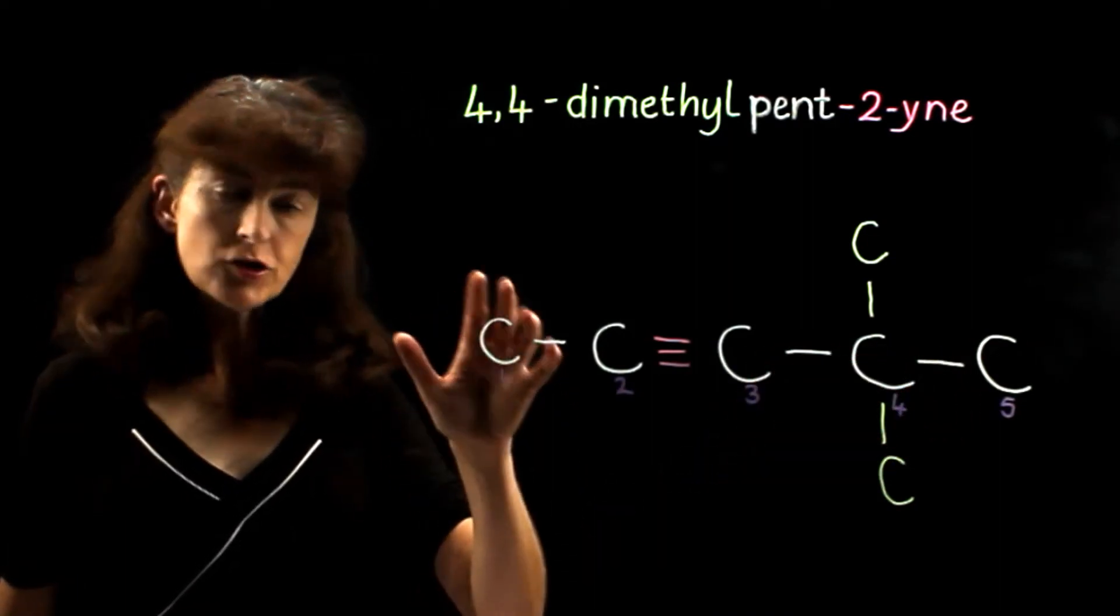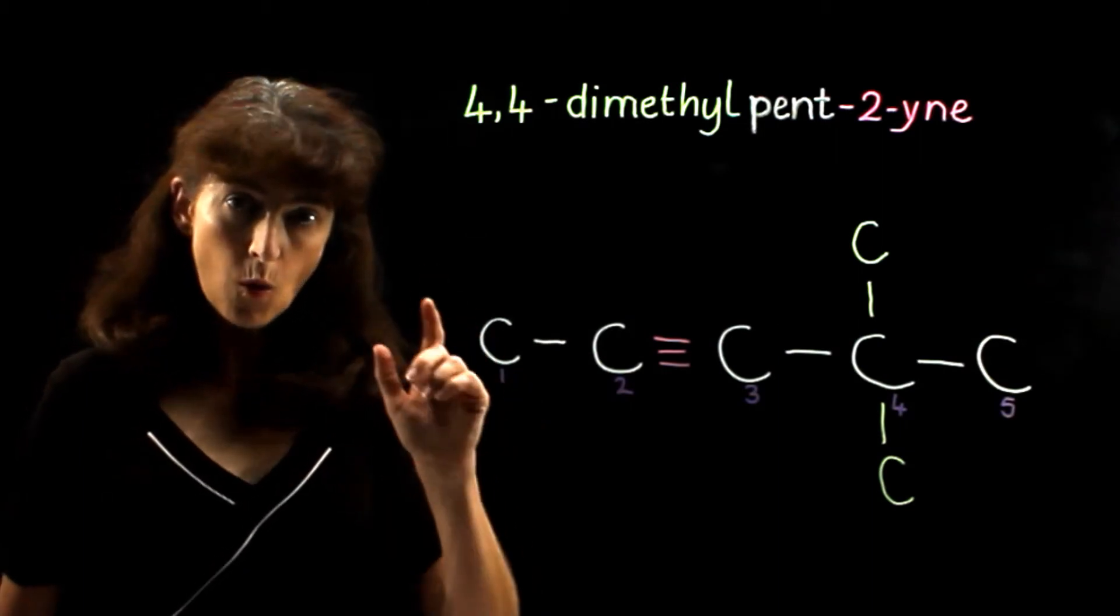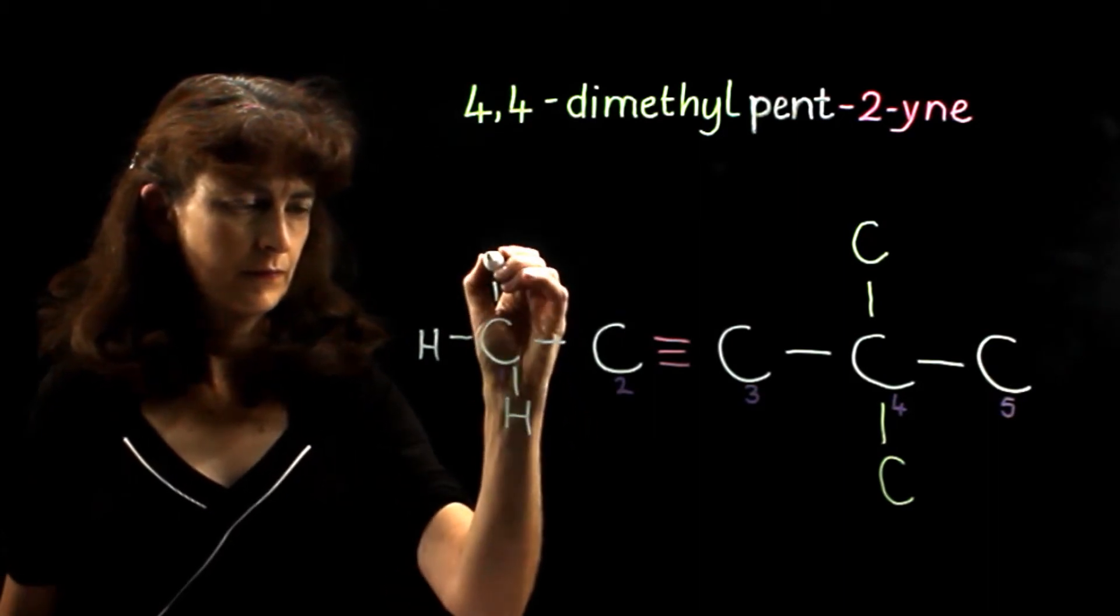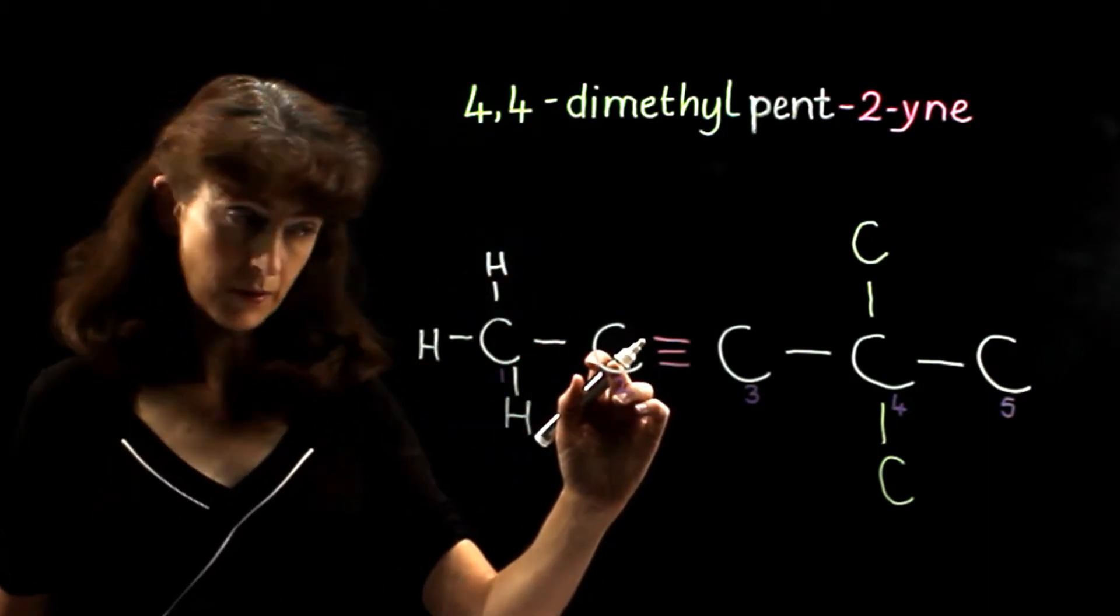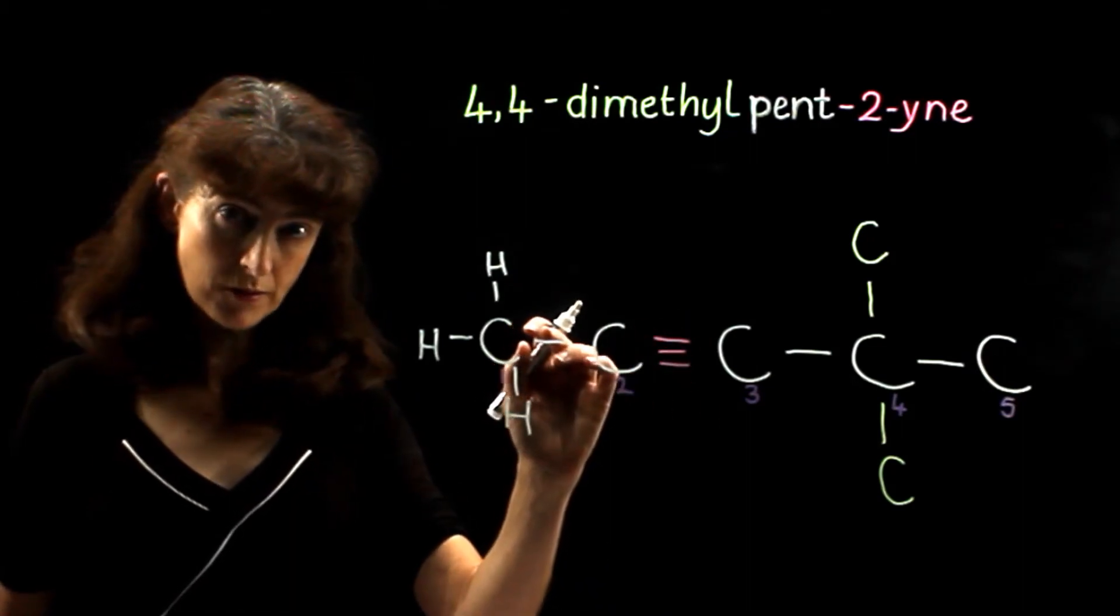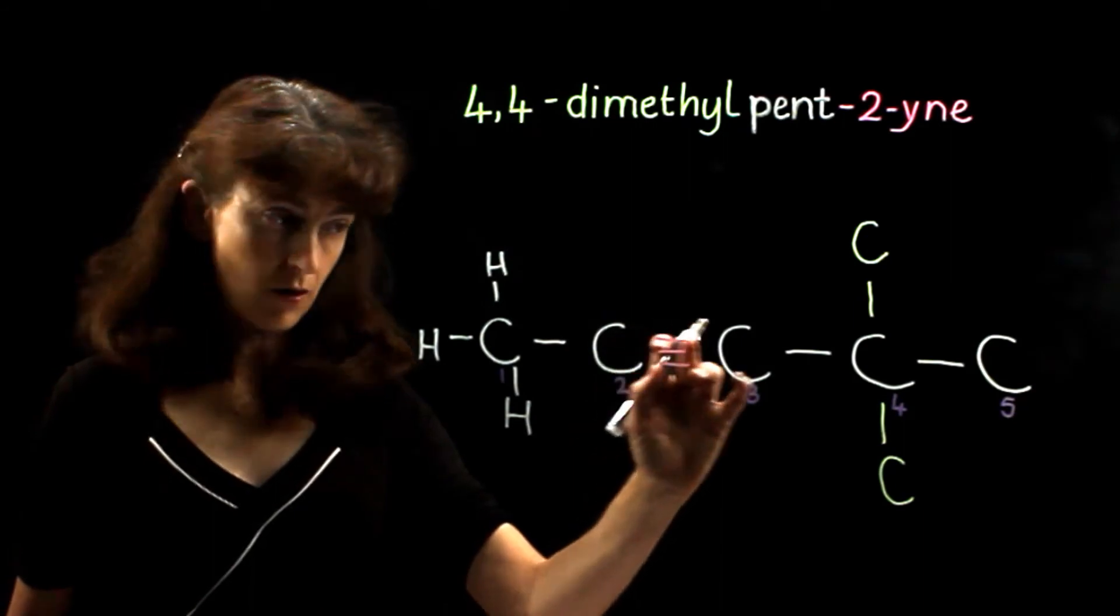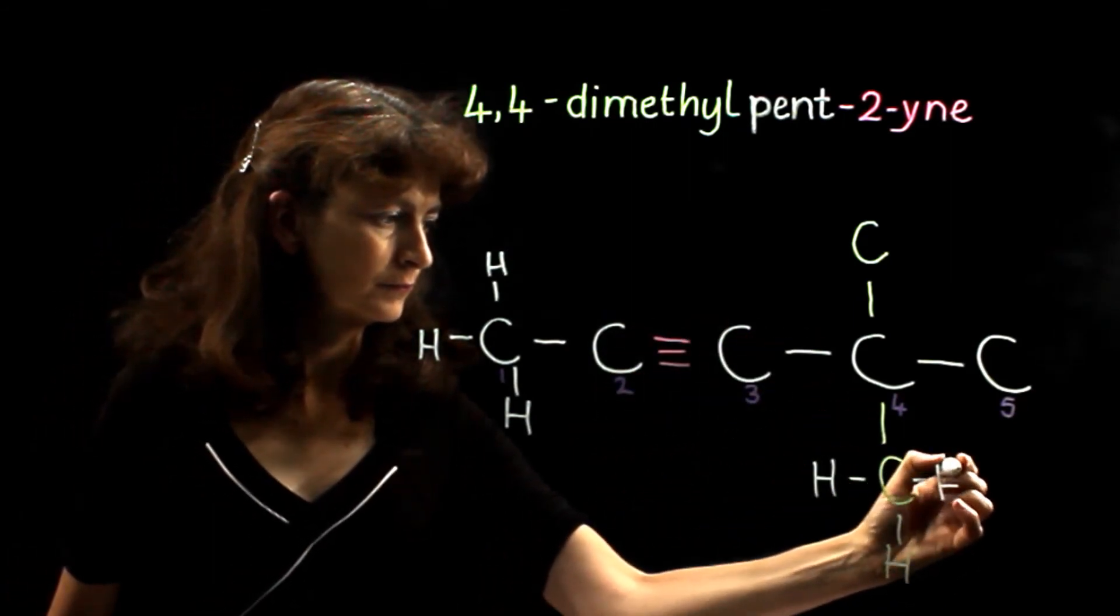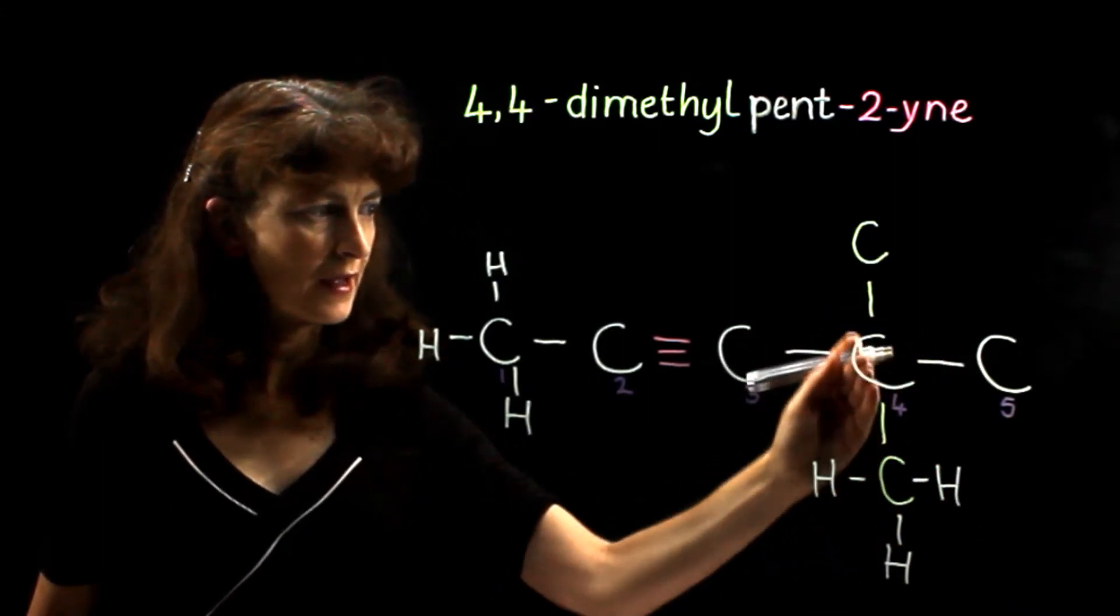All that remains to be done is to add in the hydrogens, making sure that each carbon has four bonds. That carbon has four bonds. This carbon already has four bonds, so we don't add in any hydrogen. The same with that carbon. This one already has four.